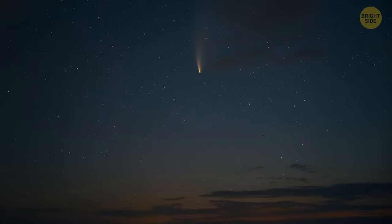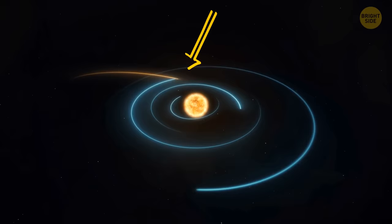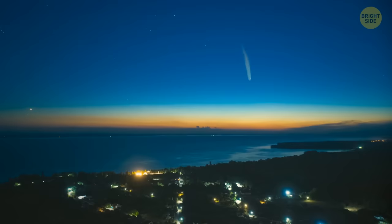Comet 15P Finlay, named after its discoverer, will visit us on October 27, 2060. And we've actually known about this since the 19th century. It will be one of the closest comets to approach Earth in the last 100 years. It'll fly by at a distance of just 4.6 million miles. The view is sure to be very beautiful.